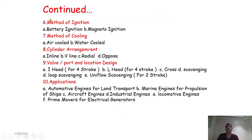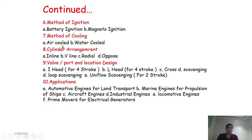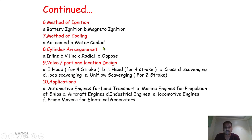The sixth classification basis is the method of ignition: (a) battery ignition and (b) magneto ignition. The seventh basis is the method of cooling: air-cooled engine and water-cooled engine. The eighth classification is on the basis of cylinder arrangement: inline engine, V-line engine, radial engine, and opposed engine — several types exist under cylinder arrangement.